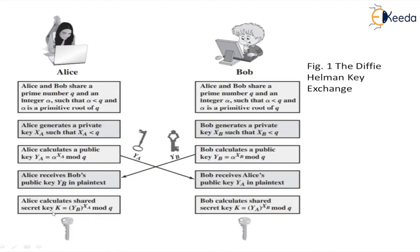Alice calculates the shared secret key k as y_B raised to x_A mod q, and Bob calculates the shared secret key k as y_A raised to x_B mod q. The basic idea is to provide public keys and exchange them.